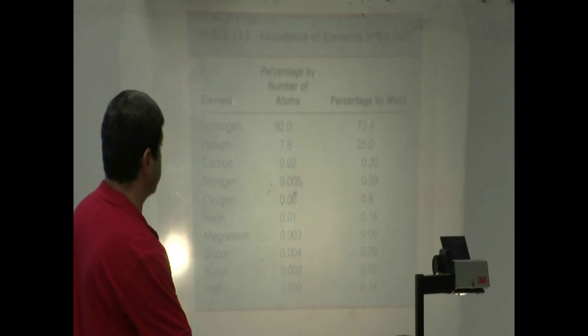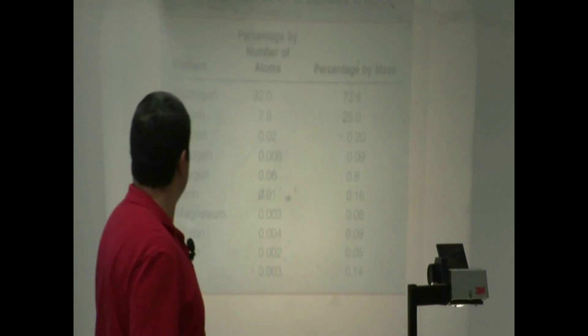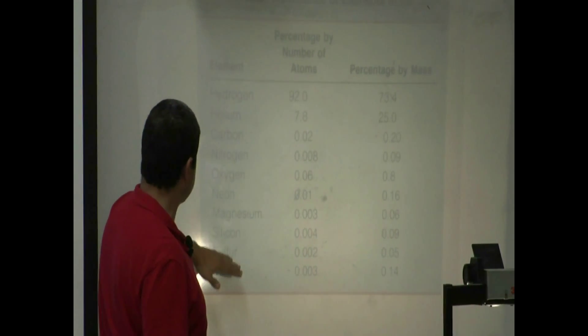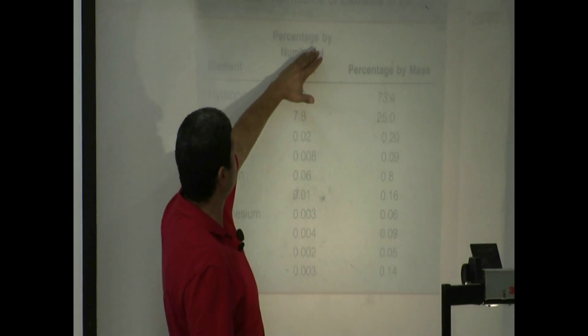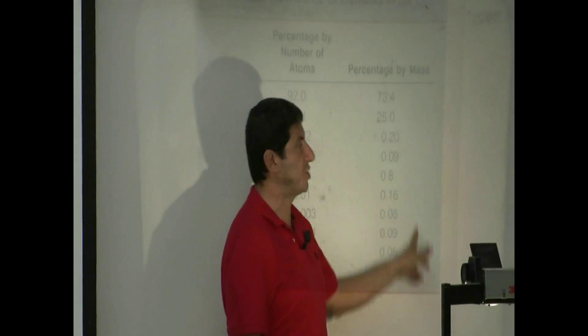This is known as abundance of elements in the sun. So if you take hydrogen, helium, carbon, nitrogen, oxygen, neon, magnesium, silicon, sulfur, iron, you can either break it down by percentage by number of atoms or percentage by mass.